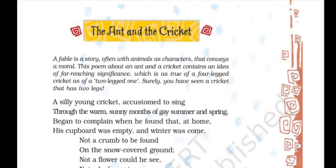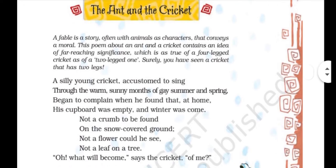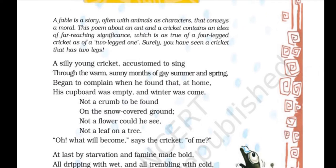So now let's start with the poem. 'A silly young cricket, accustomed to sing through the warm, sunny months of gay summer and spring, began to complain when he found that at home his cupboard was empty and winter was come.' Now, there was a cricket — he was young and he was silly, i.e. bevakoof. So he was accustomed to sing throughout the summer; when the weather was warm and good, he used to sing.